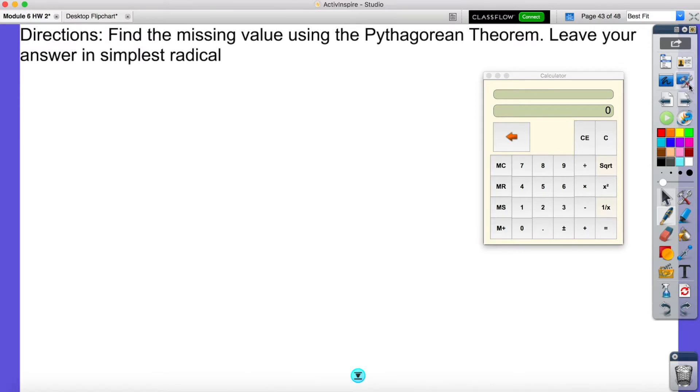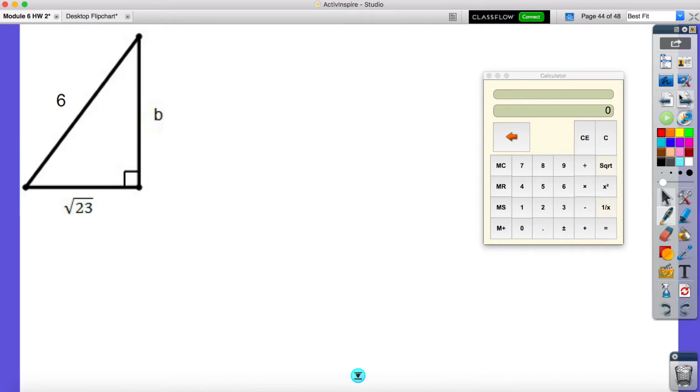So it says directions: find the missing value using the Pythagorean Theorem. Leave your answer in simplest radical form. So it says no decimals essentially is what it's saying, we just want radicals. So let's go ahead and look at this now. First thing I need to do is label my sides. Now remember, across from the right angle is my hypotenuse, which is always my C. And my B is labeled, and this is A.